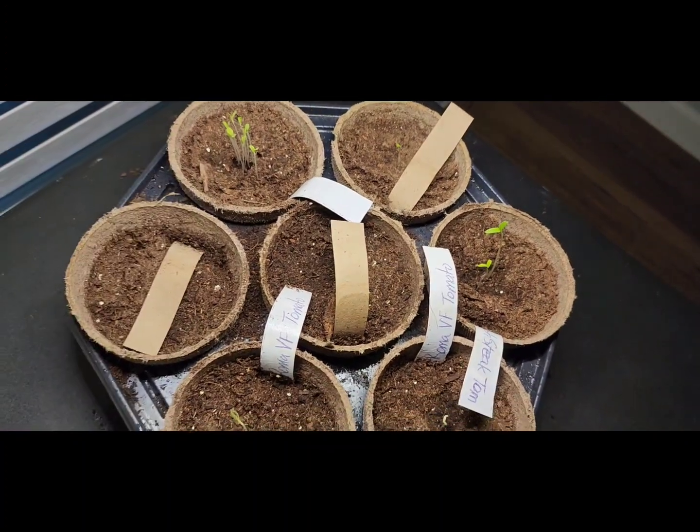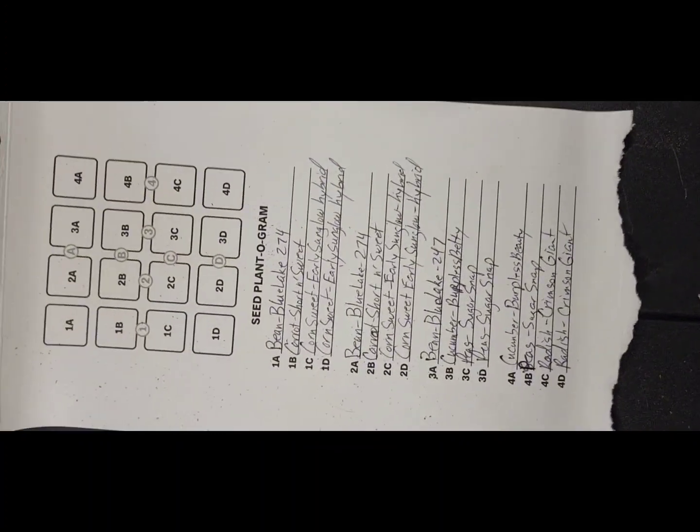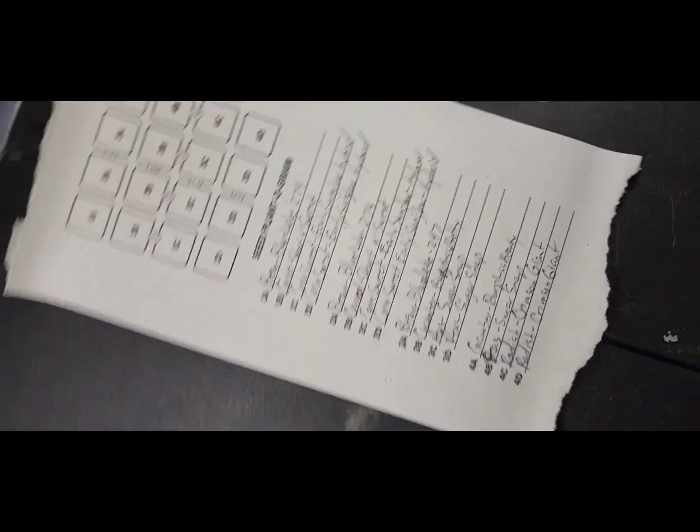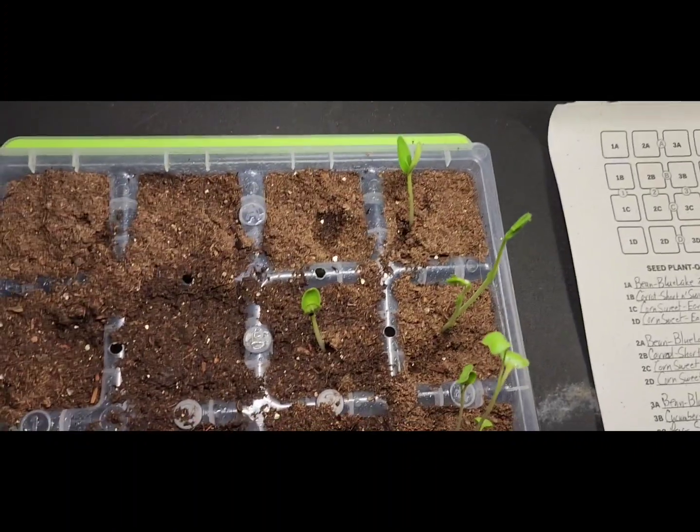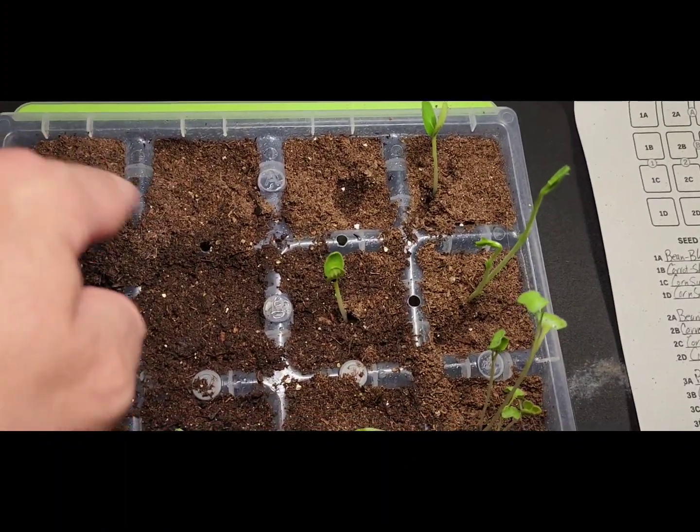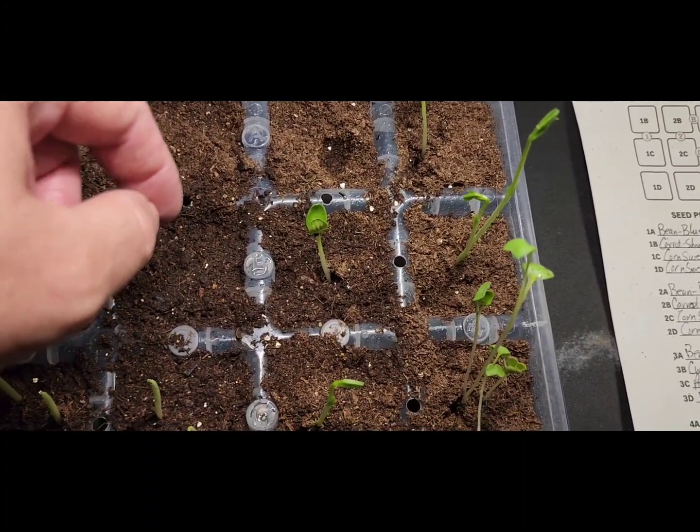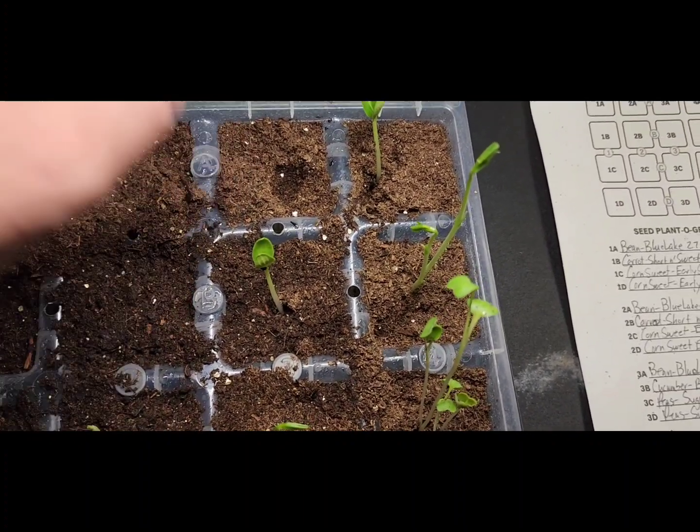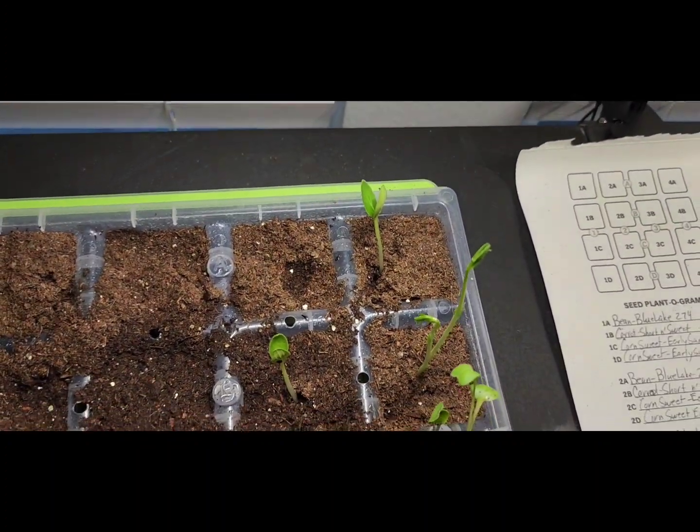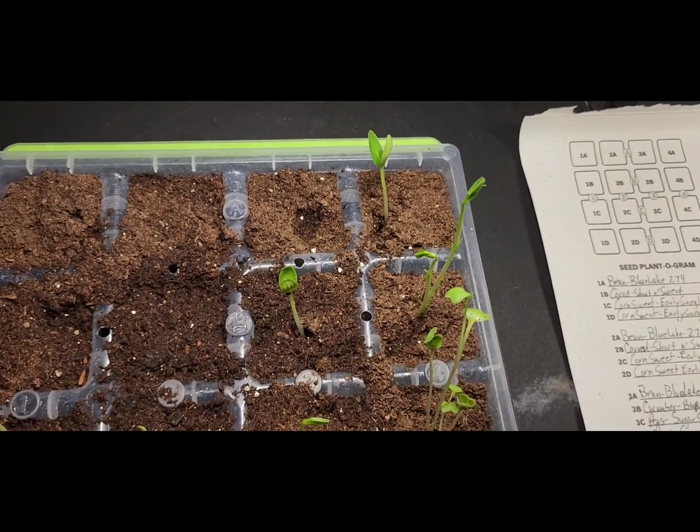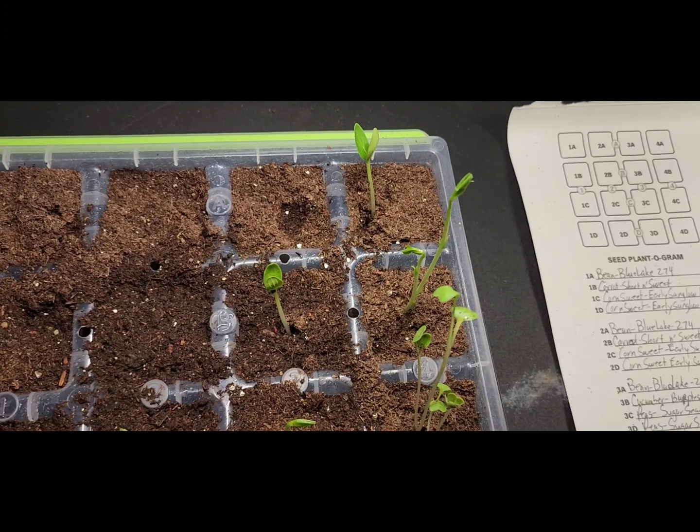Here is what we've planted in the square tray. Going across, 1a and 2a are both blue lake bean. Nothing's happened there. 3a is also a bean, but as you can see, 4a we've got a cucumber popping up.